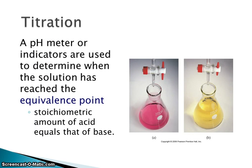In an acid-base titration, we're going to either use a pH meter or an indicator to figure out when the titration is over. When it's over, we call that the equivalence point — meaning the acid and base are in their stoichiometric ratios based on the balanced equation. The indicator might change color, or we're looking for a certain pH.